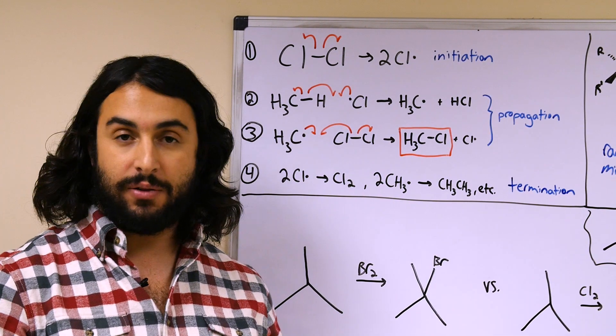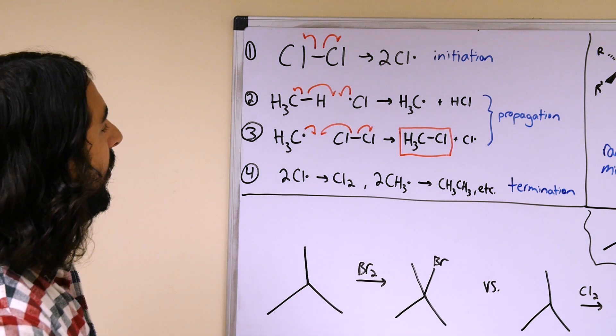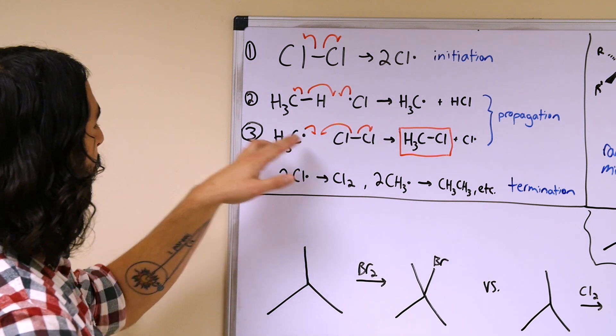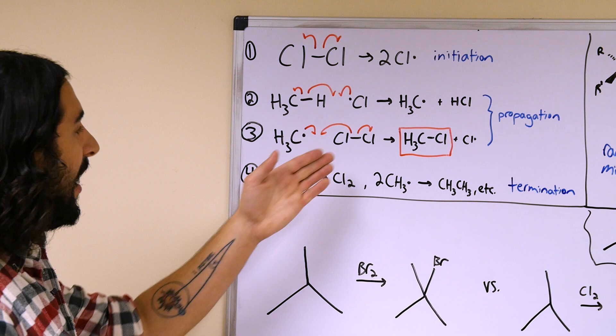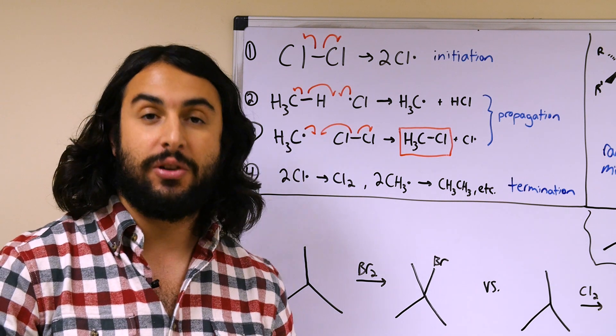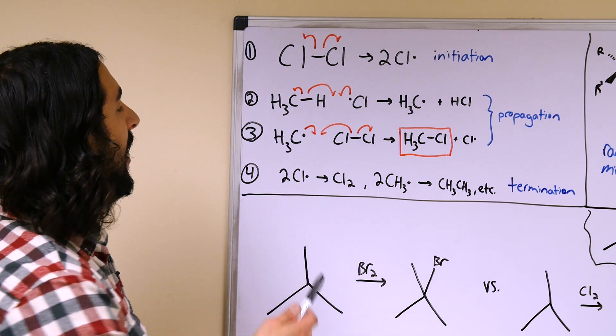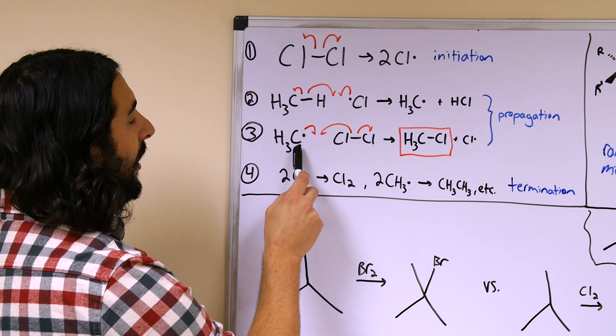This leaves us with, in this case, a methyl radical which can be very unstable. That means that now we have a methyl radical swimming around, and if it finds another molecule of chlorine, it is going to propagate further.